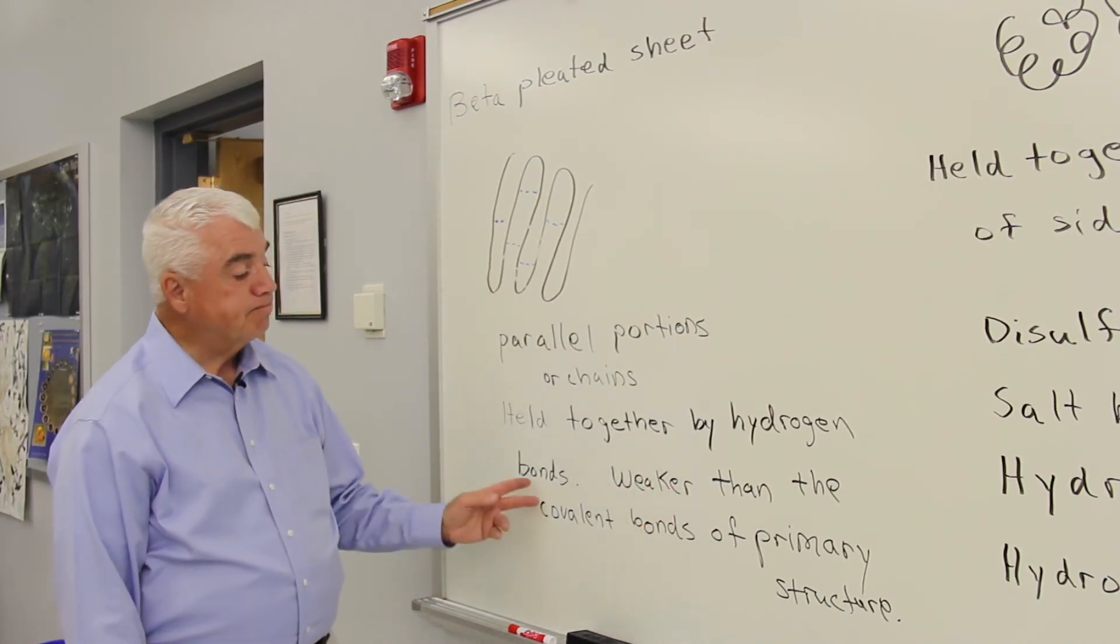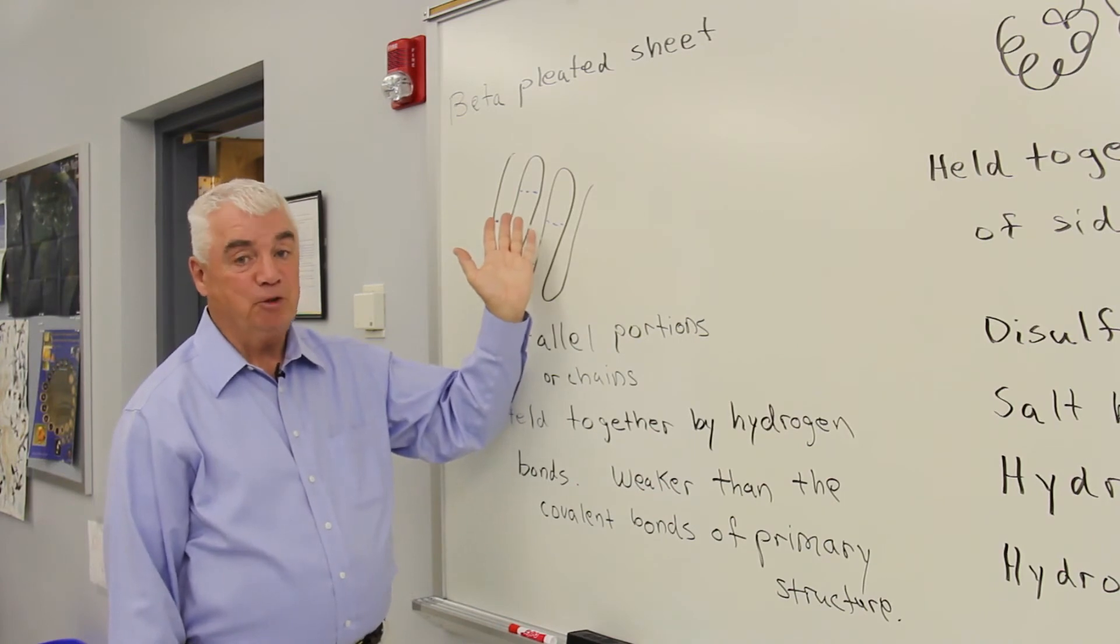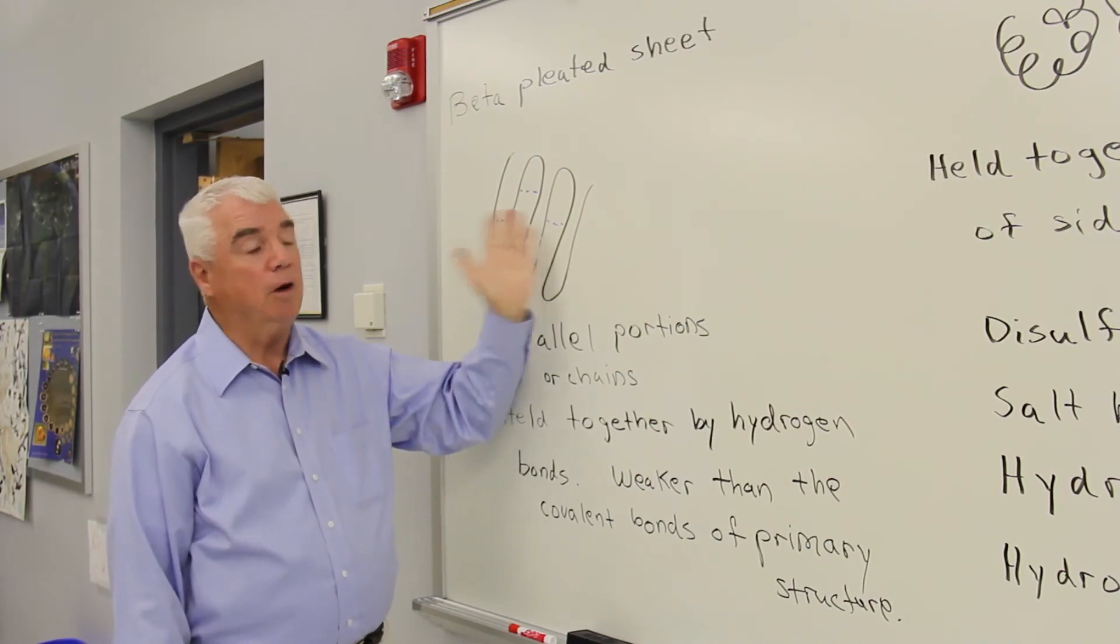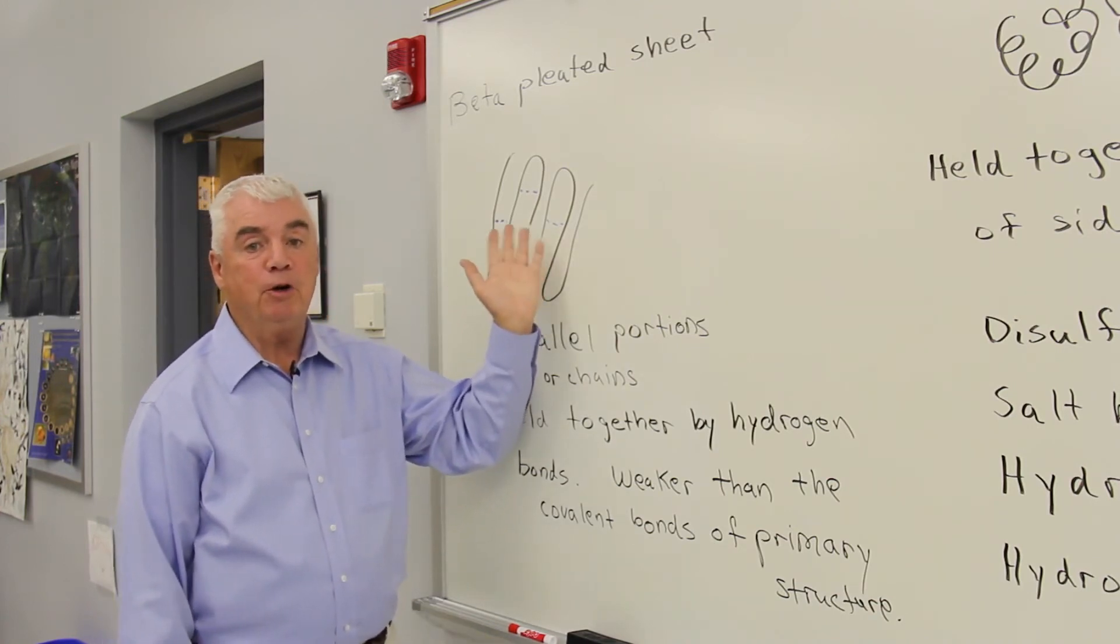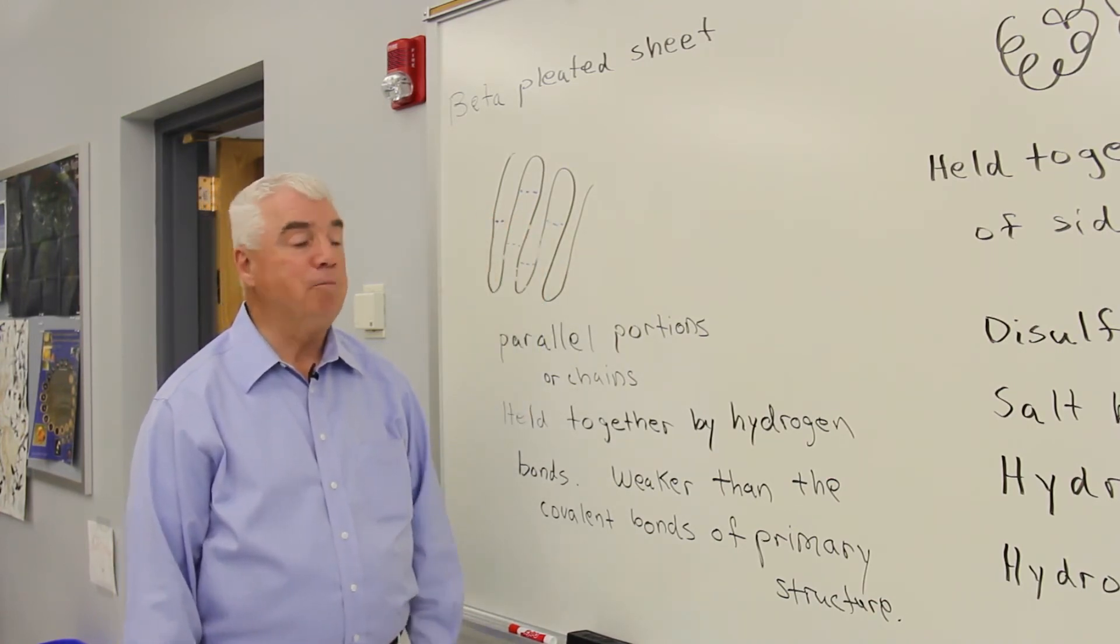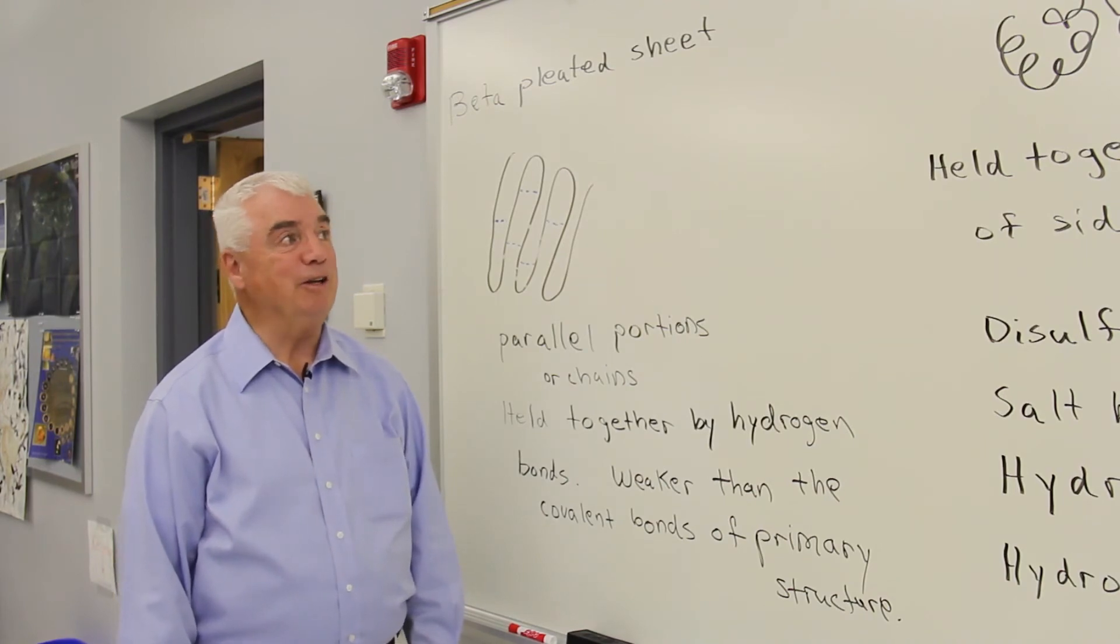And that means that we can disrupt the structure, the secondary structure, a lot easier than the primary structure. Changes in temperature or variations in solvent, for example, could disrupt secondary structure.